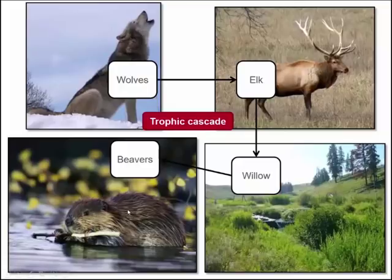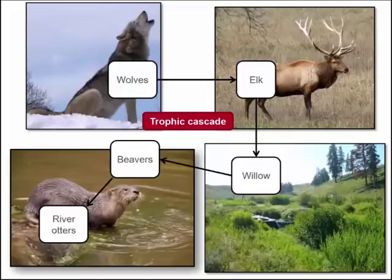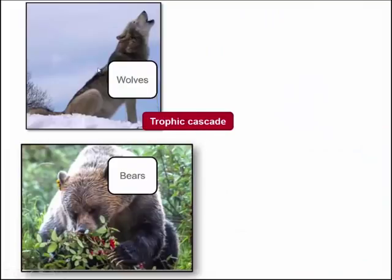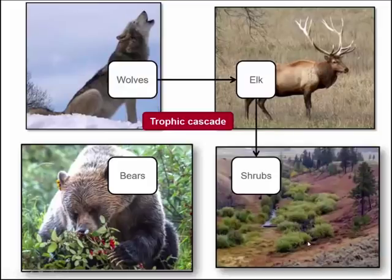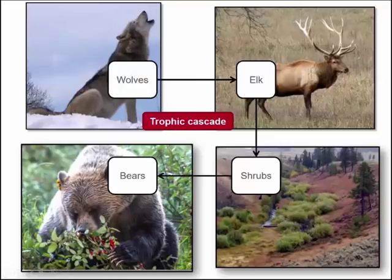It doesn't quite stop there. With the increase in beavers, we have more dams along the rivers and more pools, which leads to an increase in fish, frogs, and amphibians, and an increase in river otters which like these pools and like to eat the fish. These kinds of effects across all trophic levels is called a trophic cascade. Another example is how wolves affected bears — wolves reduced elk populations, which led to an increase in shrubs bearing berries that bears like to eat, so bear populations increased.